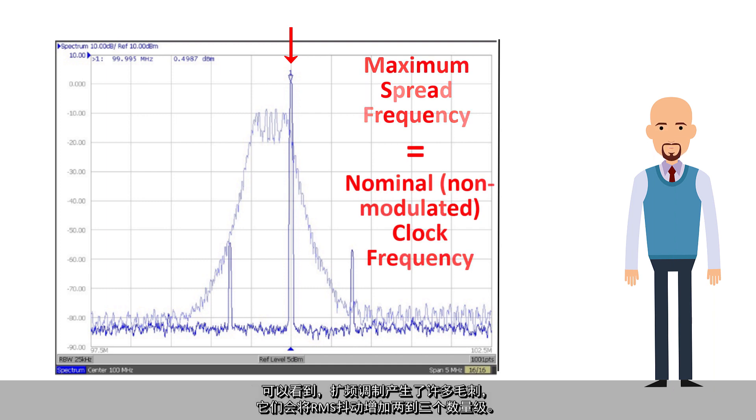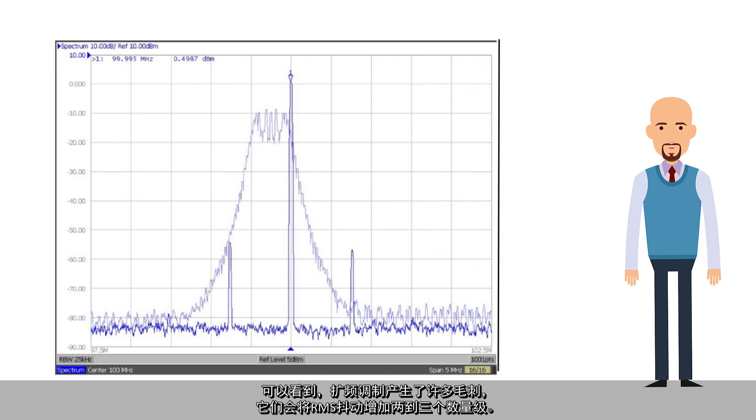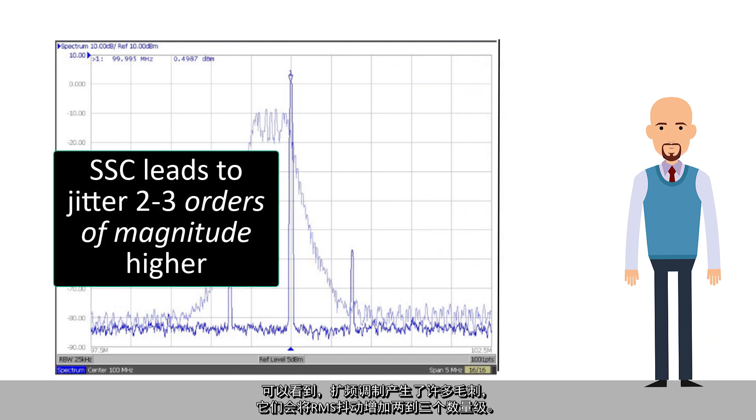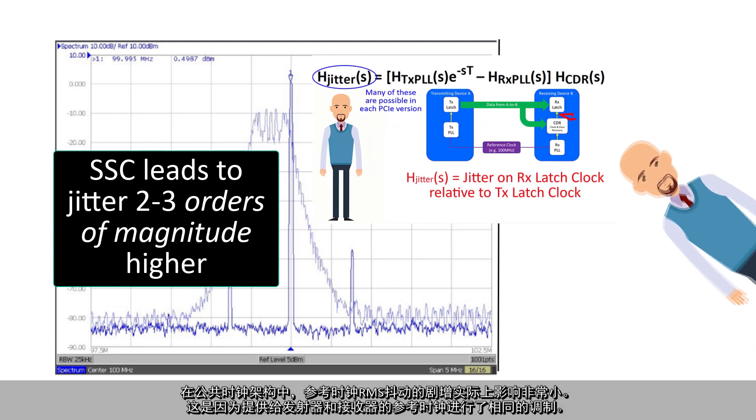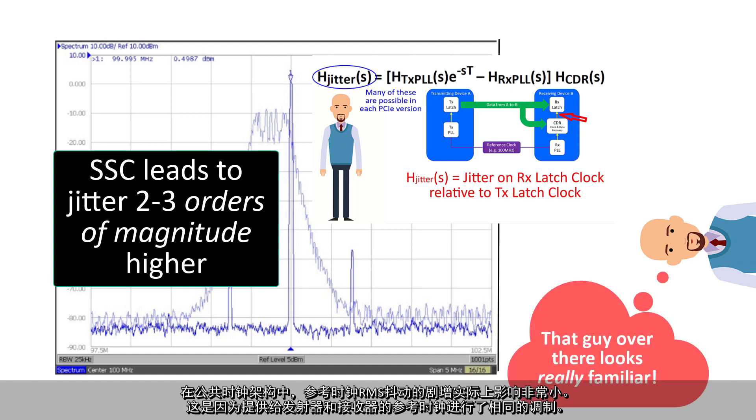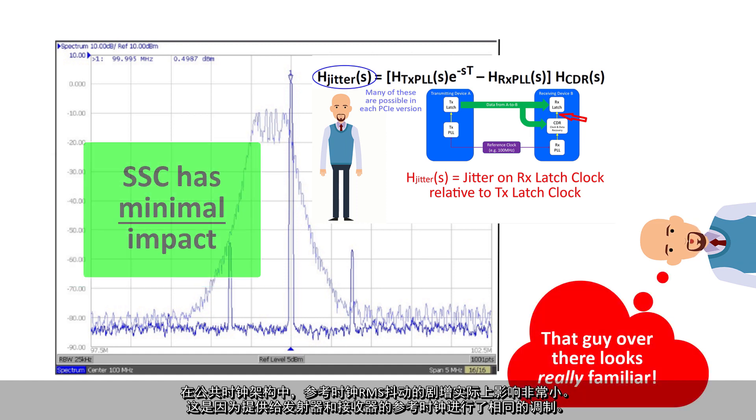We see here that the spread spectrum modulation creates many spurs that can increase the RMS jitter by two or even three orders of magnitude. In the common clock architecture, the impact of this very large increase in reference clock RMS jitter is actually quite minimal.